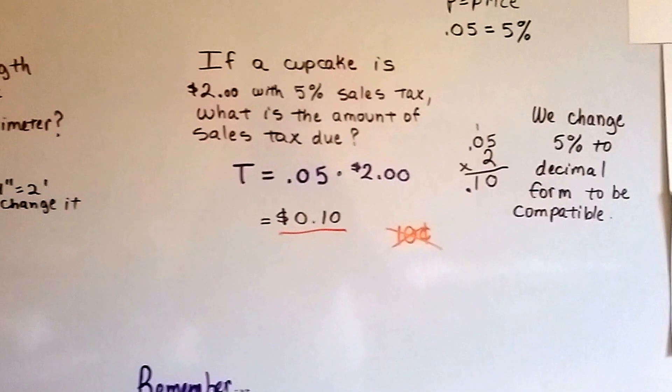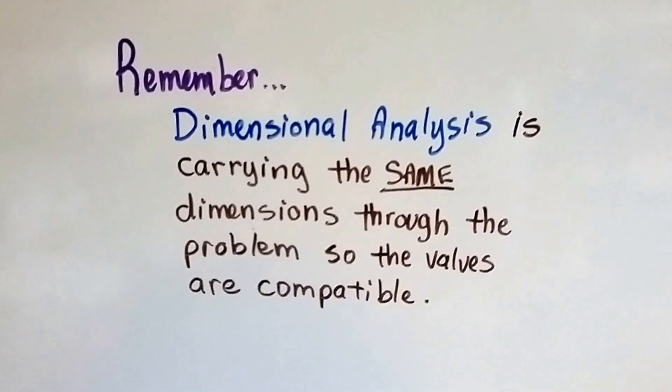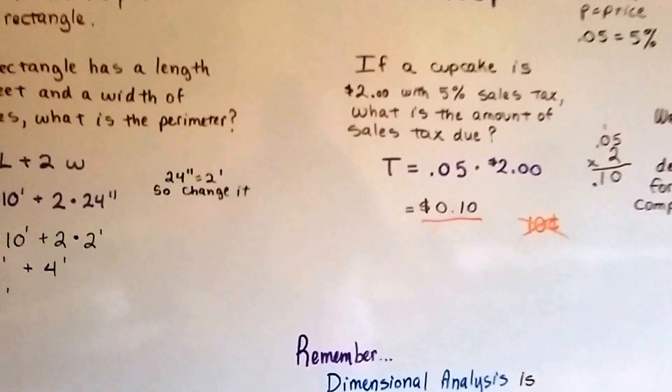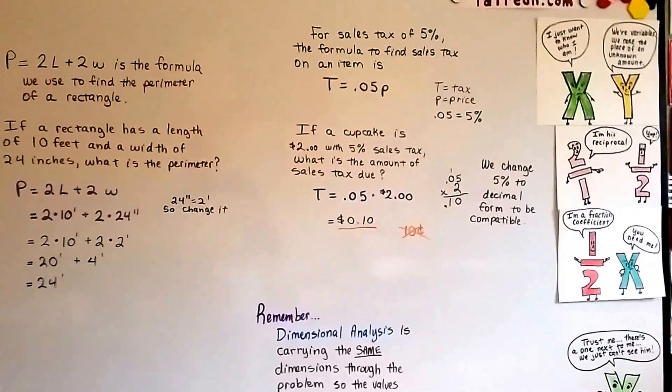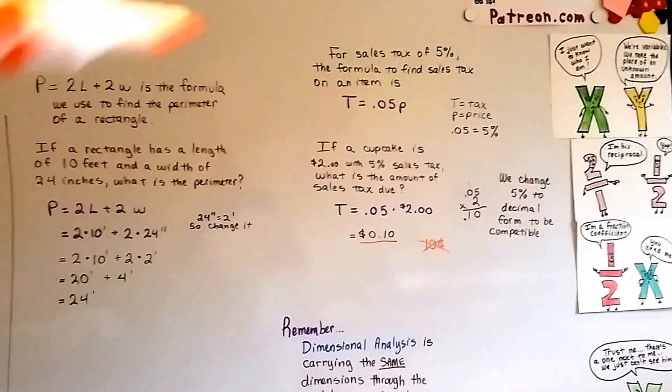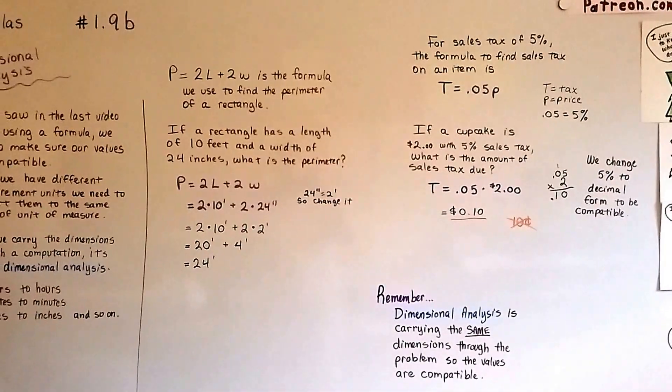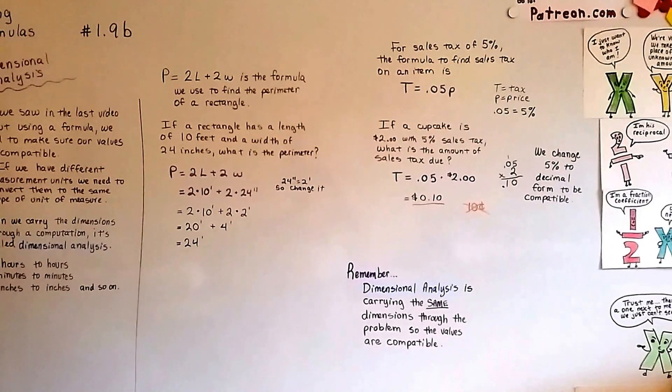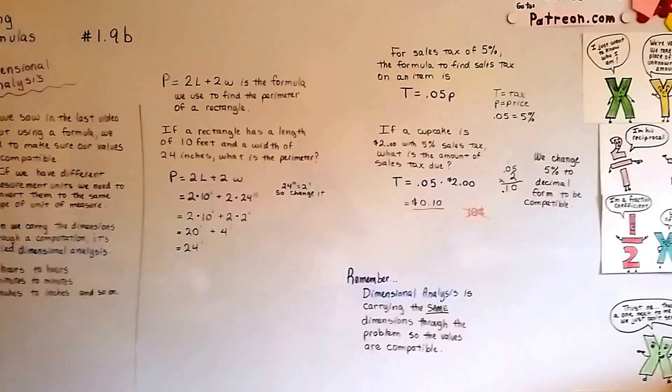So remember, dimensional analysis is carrying that same dimension through the problem so the values are compatible. If you're doing this, you want to make sure you've got inches and inches or feet or feet. You don't want one to be a decimal and the other one to be a percent. We're going to talk about writing formulas for different shapes in the next video. That's 1.9c. We're almost done with chapter 1. Bye.